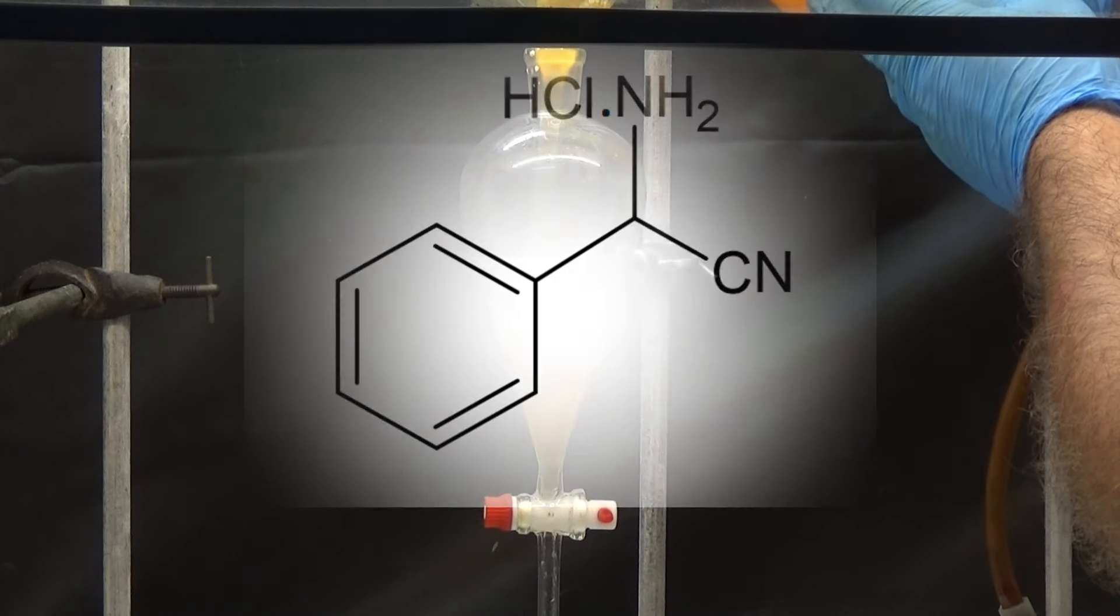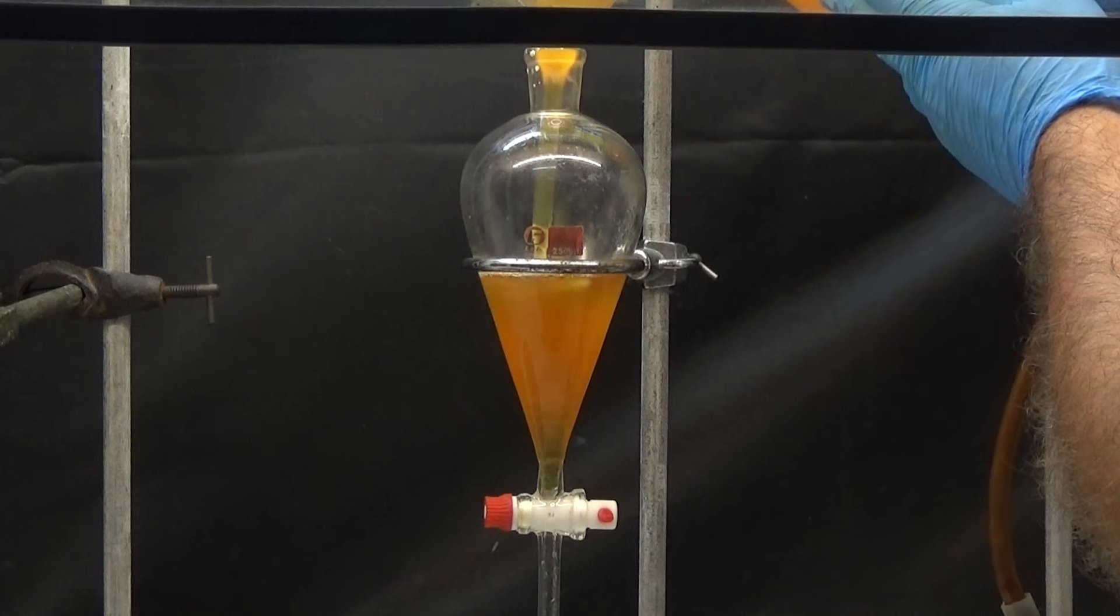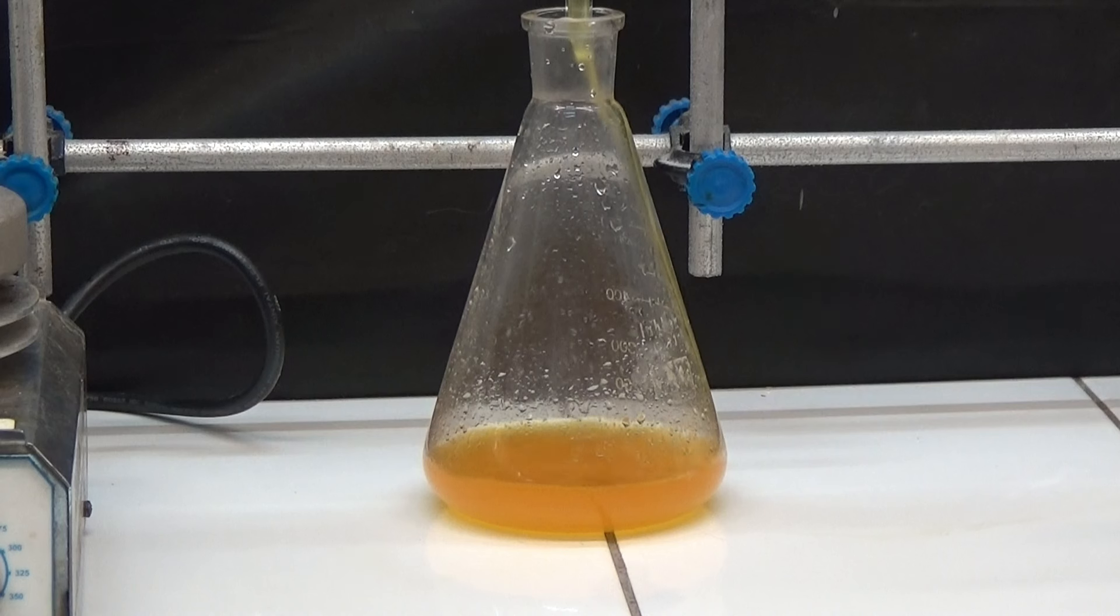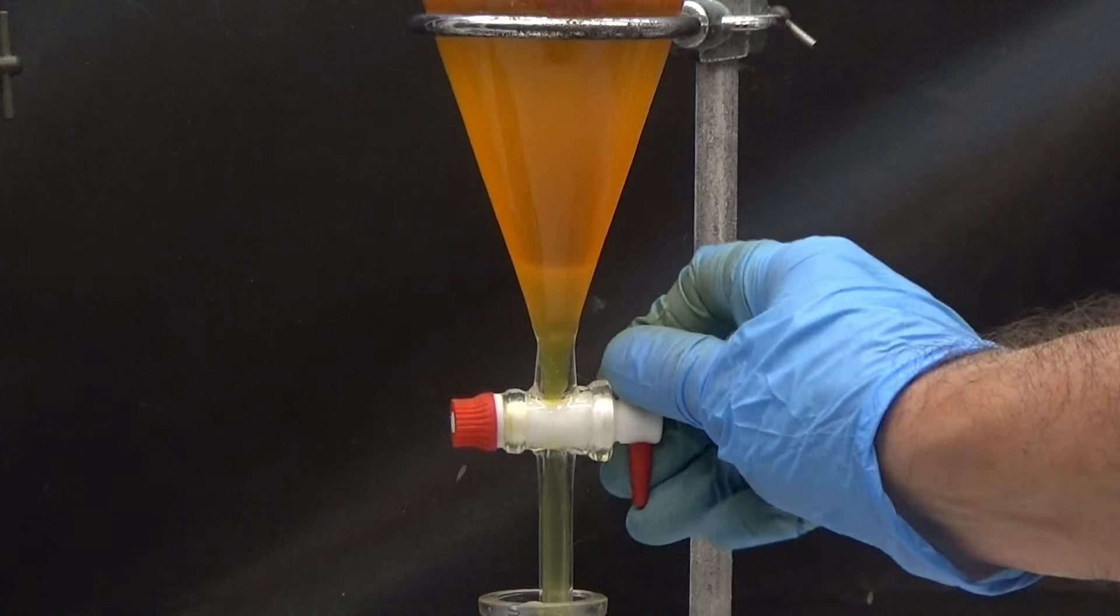We separate the aqueous phase that contains aminonitrile hydrochloride. The organic phase containing other materials is discarded to distill and recover the toluene.